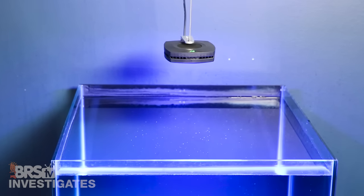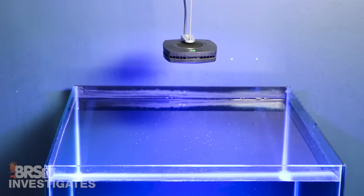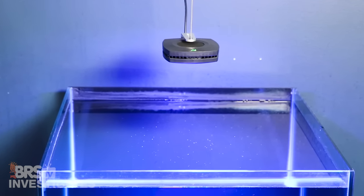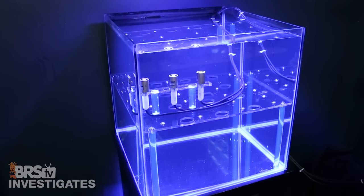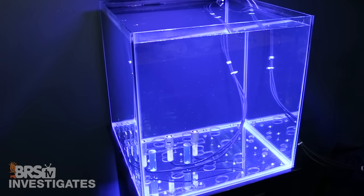We're going to start with a single AI Prime on our 24 inch cube with all channels at 100% max, mount it 8 inches off the surface of the water, and then measure a 36 point grid at a depth of 6, 12, and 18 inches deep in the tank.